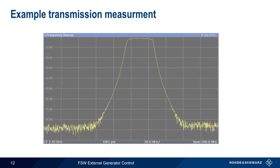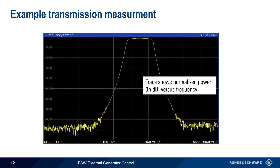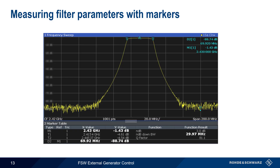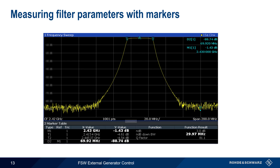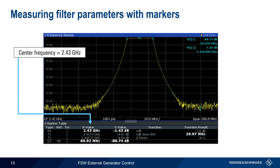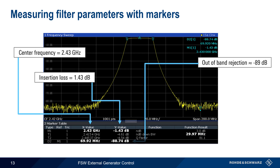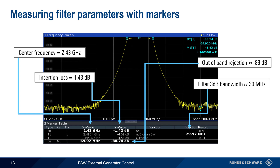On the FSW, we can see the results of a bandpass filter measurement. The trace shows normalized power in dB versus frequency. With normalization on, the displayed values are all relative to a normalized value of 0 dB. Enabling markers allows us to easily determine numerous filter parameters, such as the center frequency of the passband, the insertion loss within the passband, the level of attenuation or rejection outside the passband, and the 3 dB bandwidth of the filter. Note that Q, the quality factor of the filter, is also automatically calculated and displayed by the FSW.